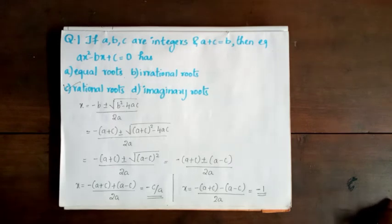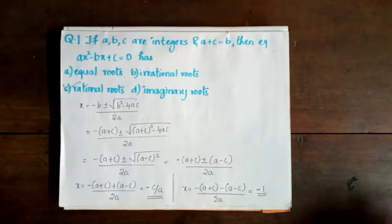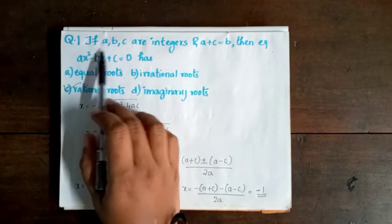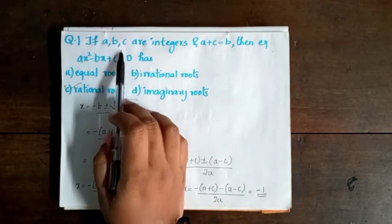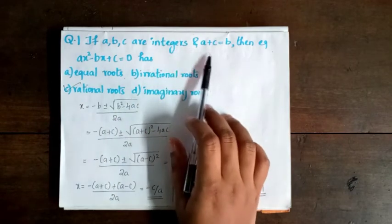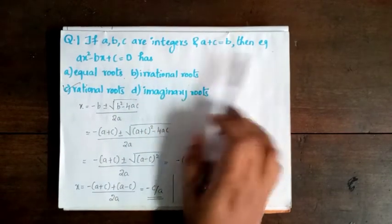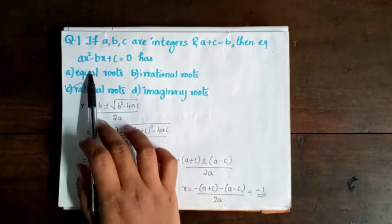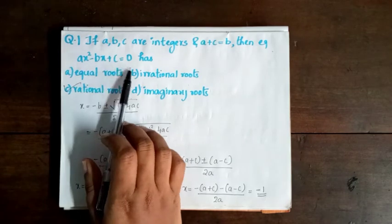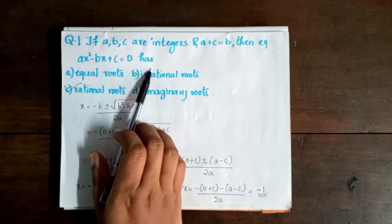In the next question: if a, b, c are integers and a plus c equals b, then the equation ax² minus bx plus c equals 0 has?